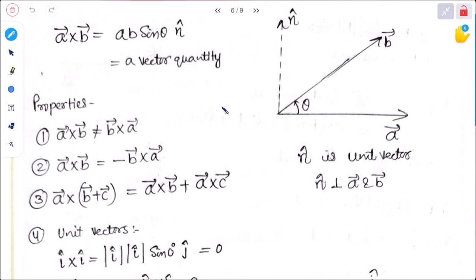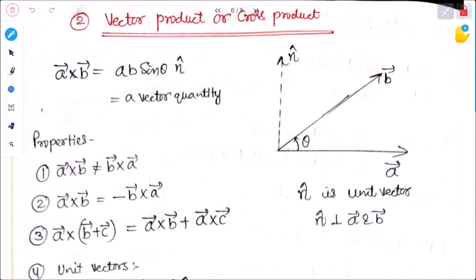Number 2 is vector product or cross product. A cross B equals A times B times sin theta times n-cap, where n-cap is the unit vector perpendicular to both vector A and vector B.